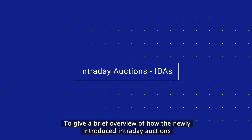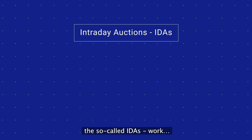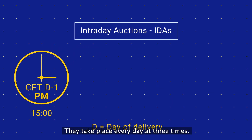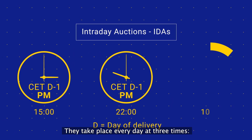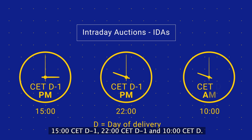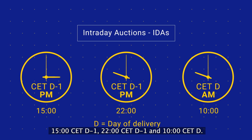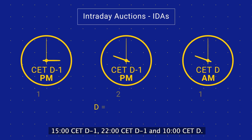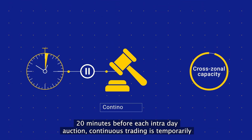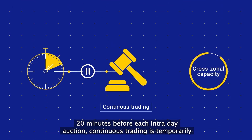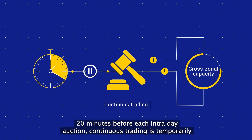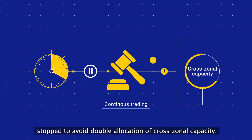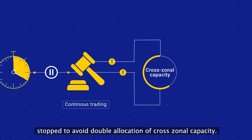To give a brief overview of how the newly introduced intraday auctions — the so-called IDAs — work: they take place every day at three times: 1500 CET D-1, 2200 CET D-1, and 0100 CET D. Twenty minutes before each intraday auction, continuous trading is temporarily stopped to avoid double allocation of cross-zonal capacity.